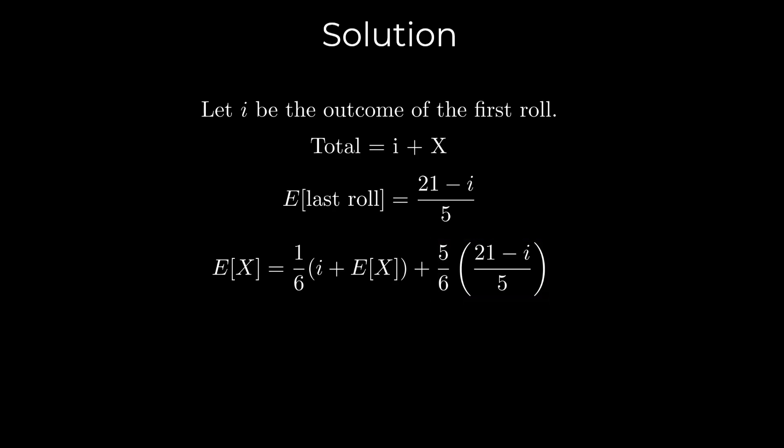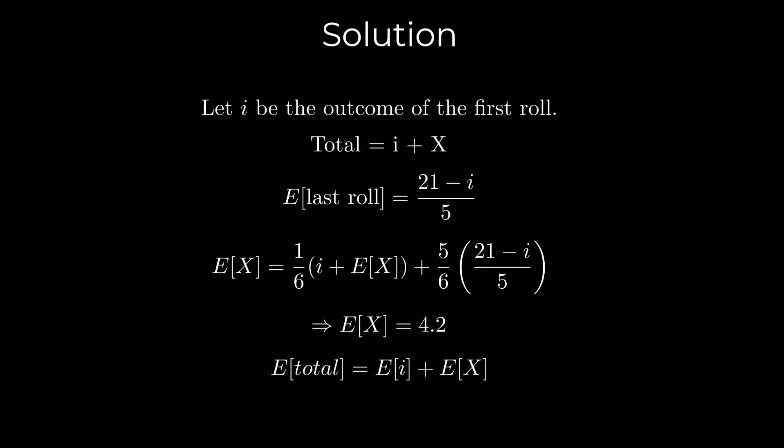In this equation, the terms involving i cancel out and we obtain E[X] as 4.2. Now, using linearity of expectation, expected value of total is equal to E[i] plus E[X].